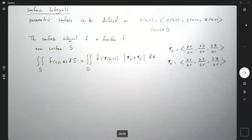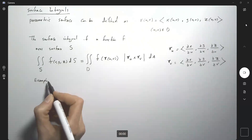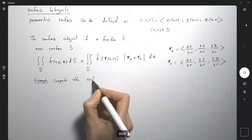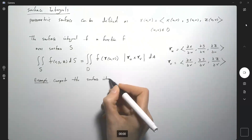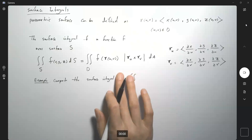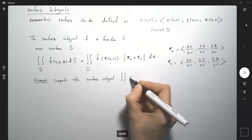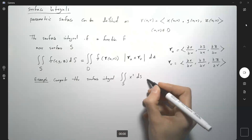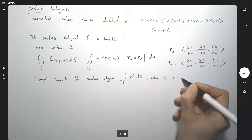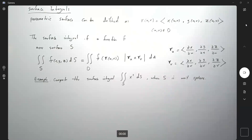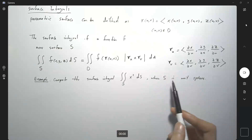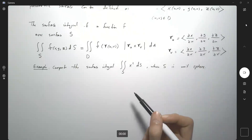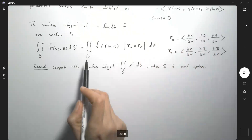Let's take a look at one example. Compute the surface integral — the double integral of x² dS over surface S, where S is the unit sphere. First, we're going to write the unit sphere in parametric form, convert everything into u and v, and then follow the formula.